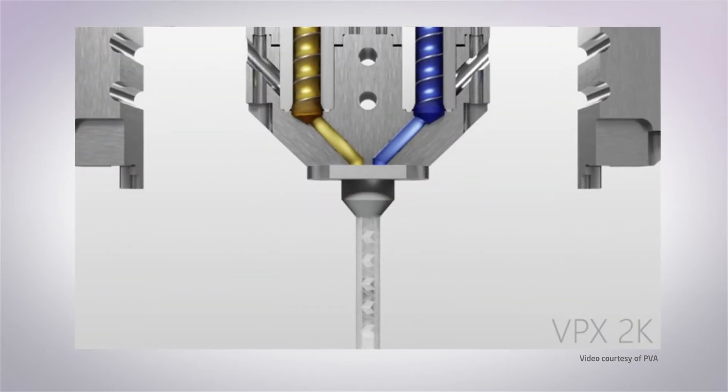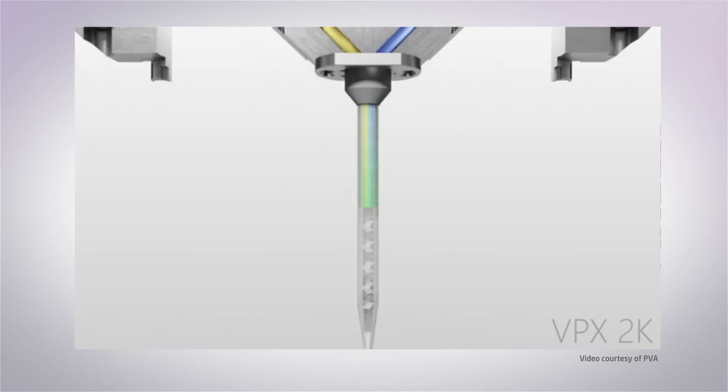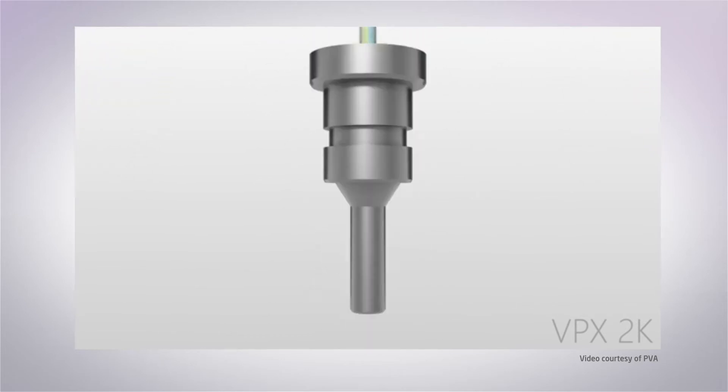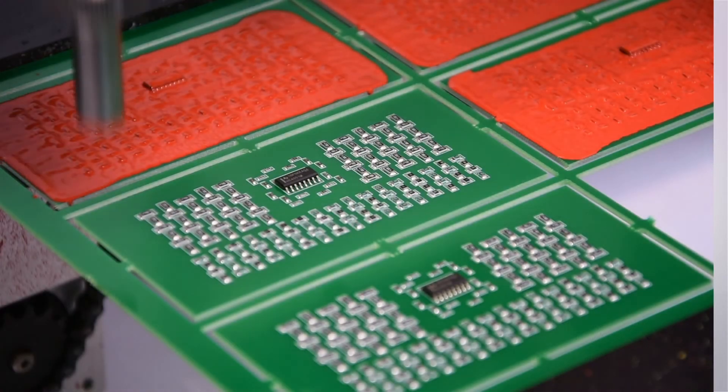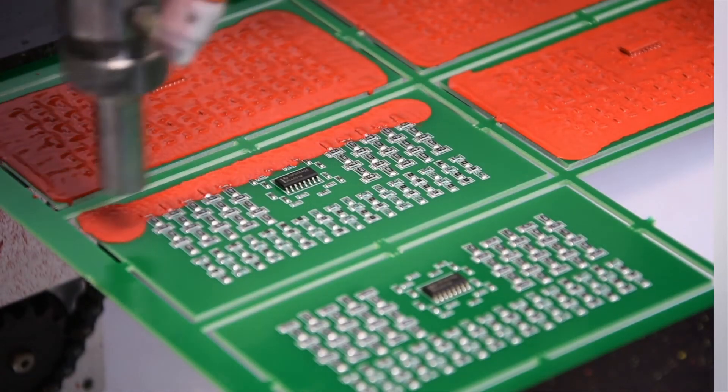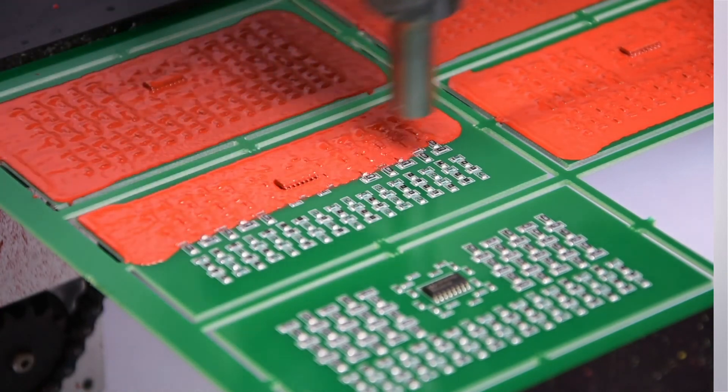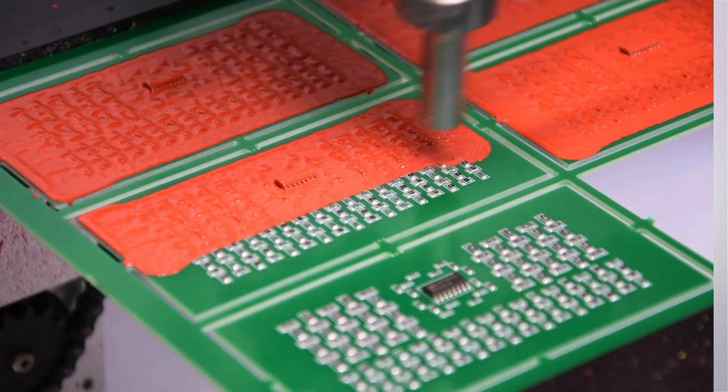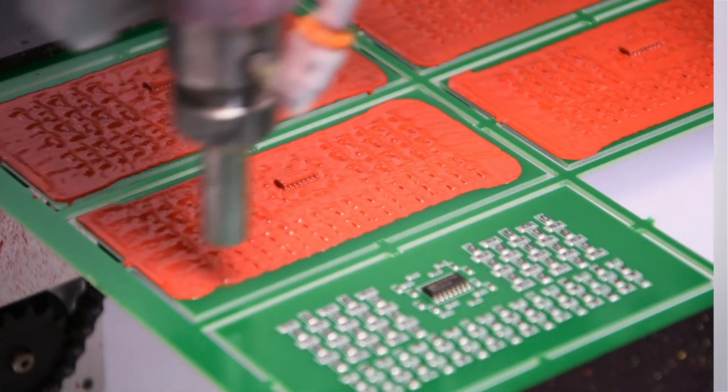The material then passes into a static mixer, which, via a series of mixing elements, combines the part A and part B, mixing them together before dispensing. Finally, the material passes through a spray cap, which attaches over the mixer. This uses compressed air to atomize the material as it is dispensed, allowing it to be sprayed over an area rather than dispensed in a single line.